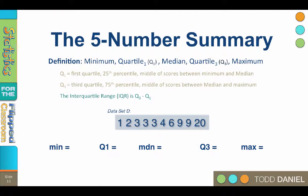As you might gather from the name, the five number summary consists of five numbers that summarize the data set. The five numbers are minimum, quartile one, median, quartile three, and maximum.